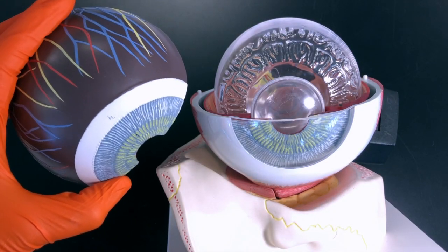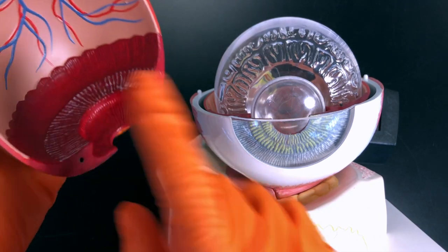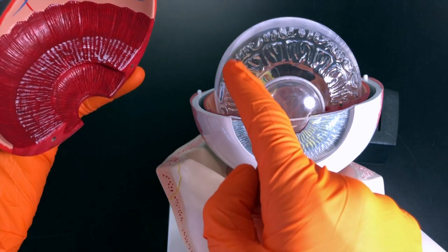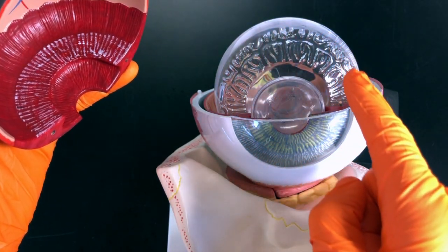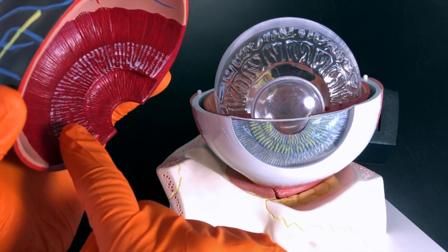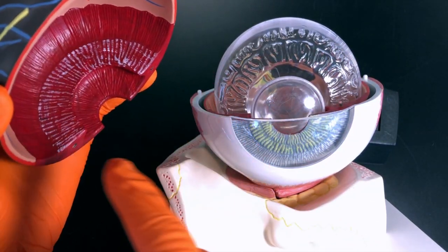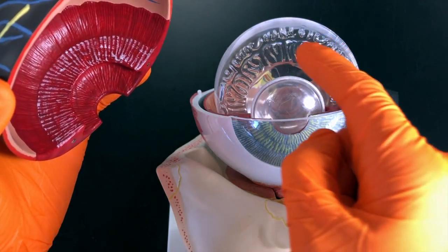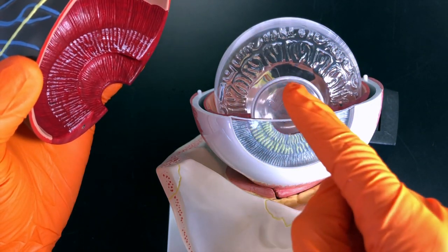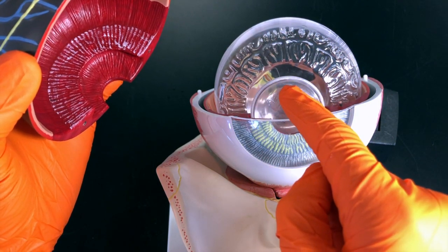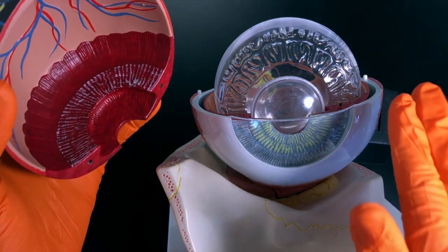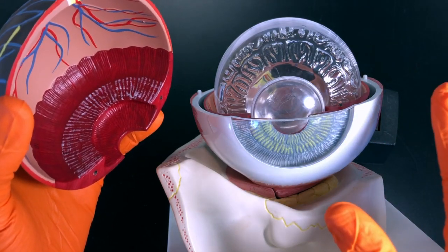Next, we have the ciliary body, which is made up of two parts. We have the ciliary muscle right here, and then the suspensory ligaments, which are these little squiggles on this model. The ciliary muscle is composed of a ring of smooth muscles attached to the suspensory ligaments. Those suspensory ligaments are attached to the lens.